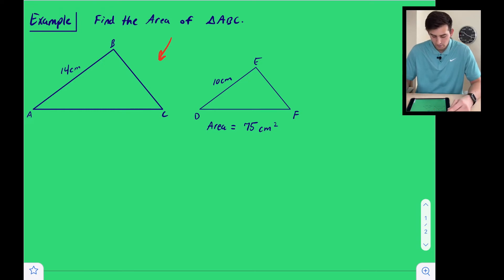So we can go ahead and set up our ratio or our proportion. Let's do 14 over 10, corresponding side lengths, 14 over 10. And remember, we want to square that. So 14 over 10 squared is equal to—now we don't know this area, and the area over here for our smaller triangle is 75 square centimeters.